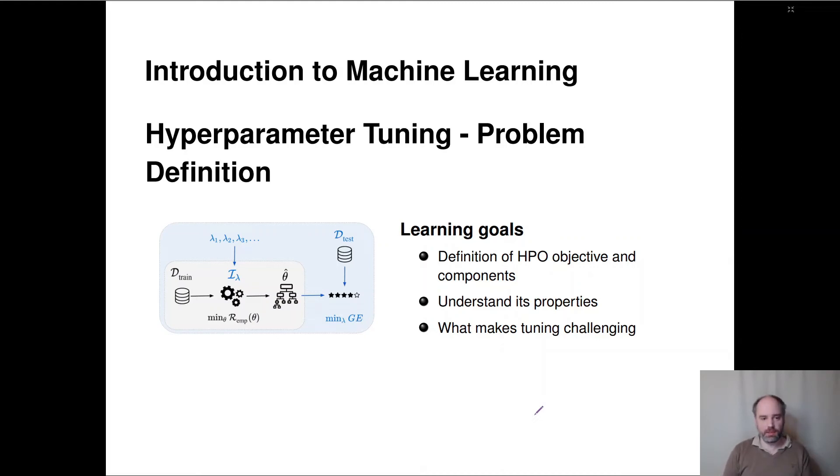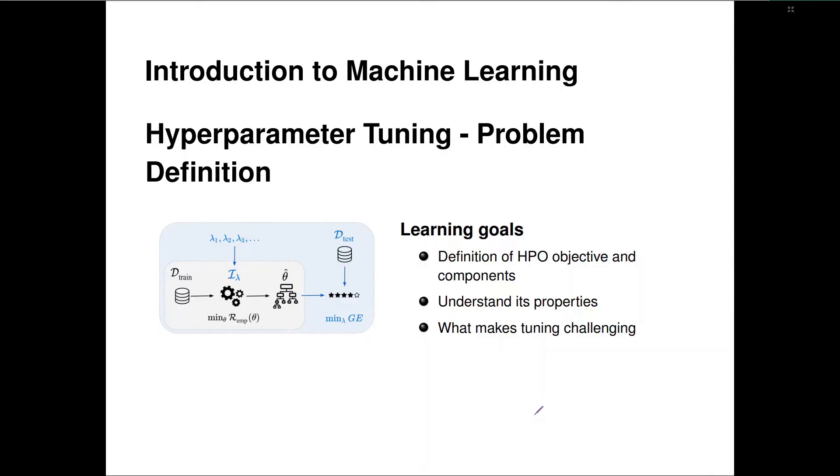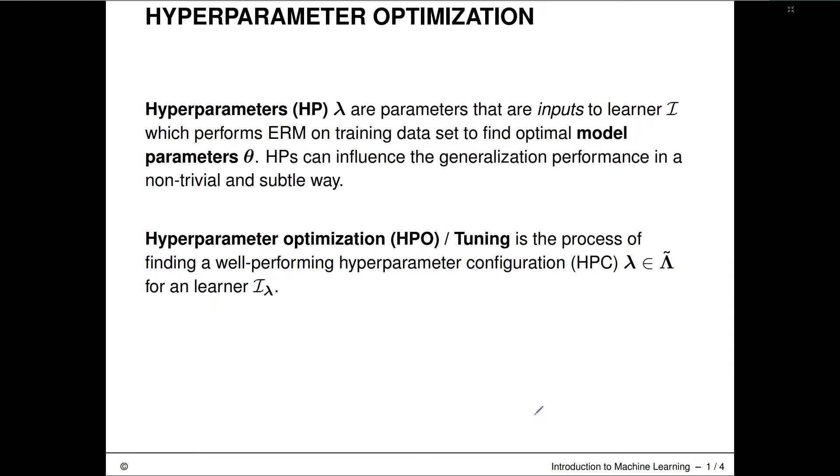Hi, and welcome to the next section in the hyperparameter tuning chapter, which is on the mathematical problem definition and its properties of the HPO objective function, and what makes this particularly challenging as an expensive black box optimization problem. Let's recall again what hyperparameters are and what hyperparameter optimization is about.